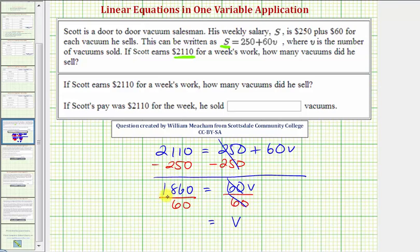On the left side, 1,860 divided by 60 equals 31, which means if Scott's pay was 2,110 dollars for the week, he sold 31 vacuums.